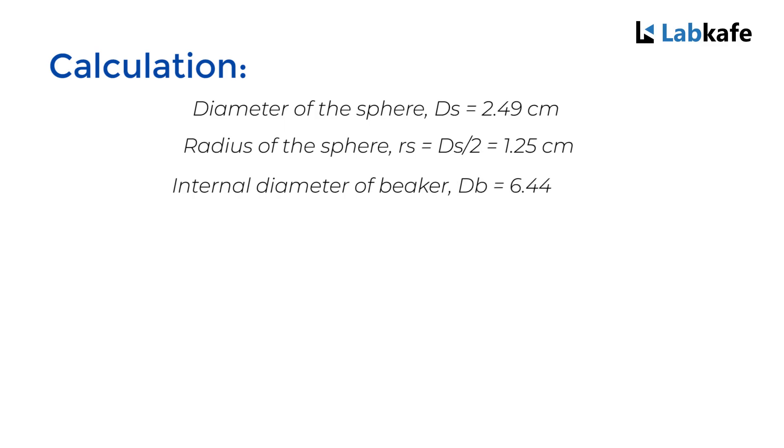The internal diameter of the beaker Db equals 6.44 cm. The radius of the beaker rb equals Db/2, which equals 3.22 cm. The depth of the beaker h equals 9.56 cm.